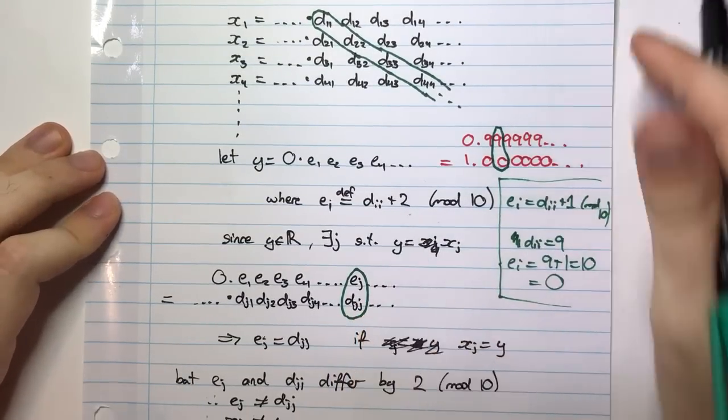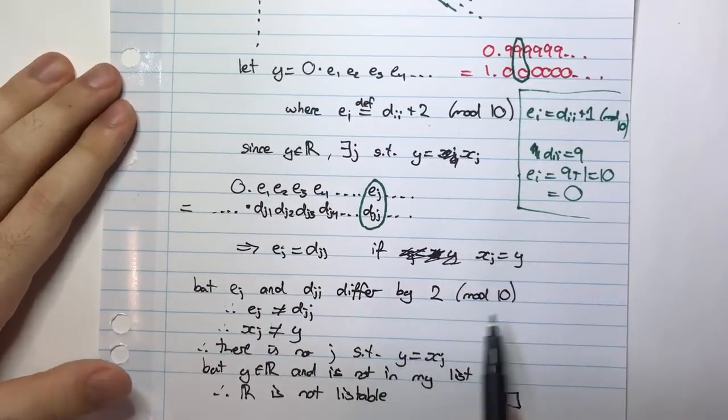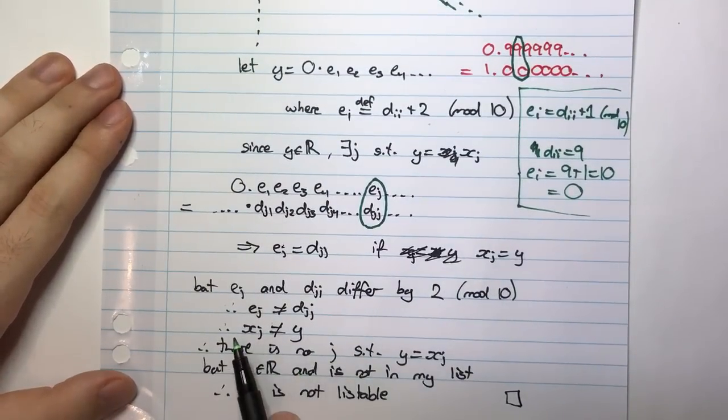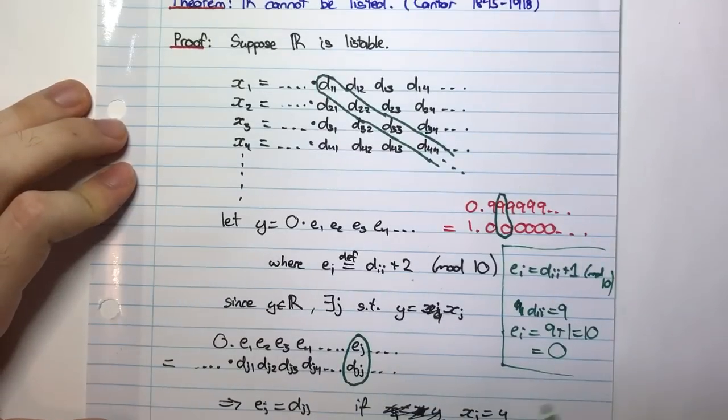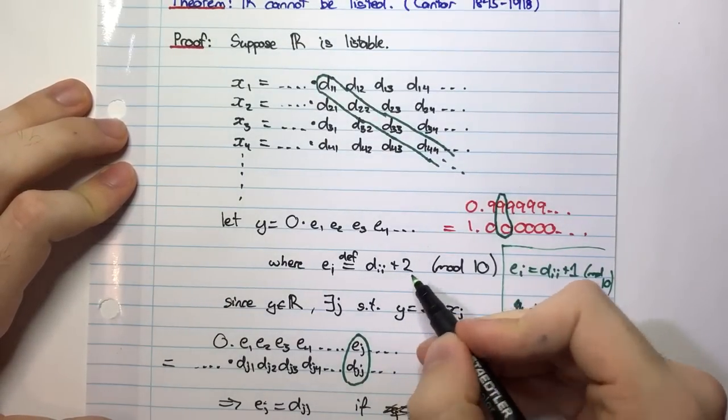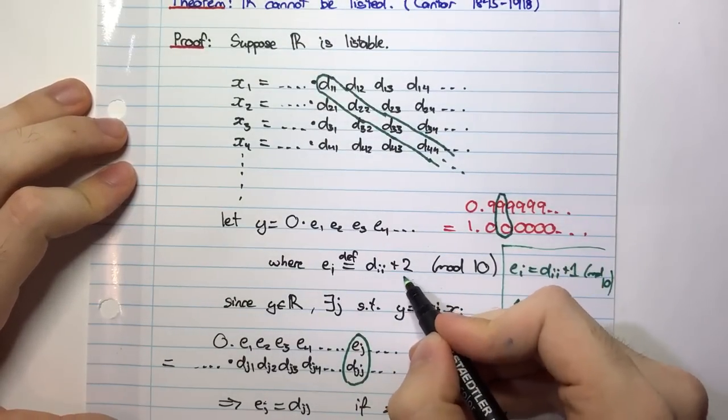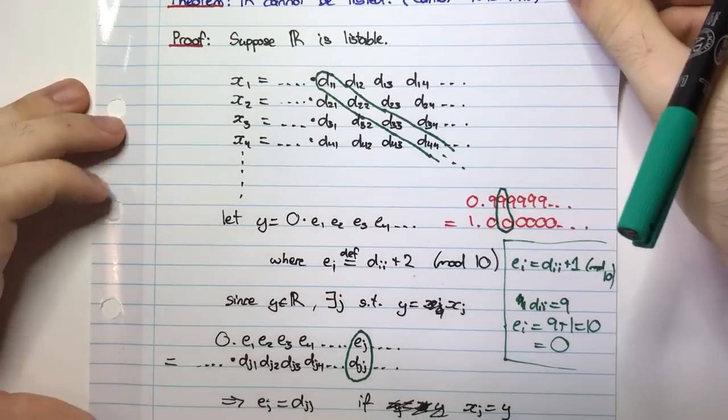So this wouldn't help my argument. But if I choose it as plus 2, this does help my argument. It does show eventually that there is no such J where Y can be XJ. In other words, Y is not in this list. So that's why we didn't choose plus 1, but we chose plus 2, which would work.